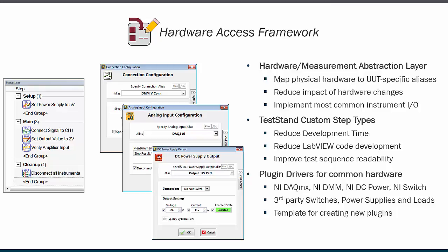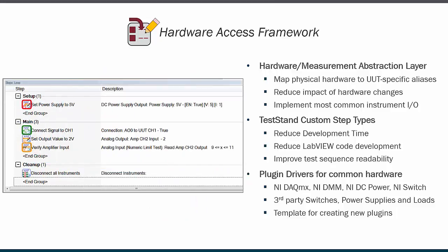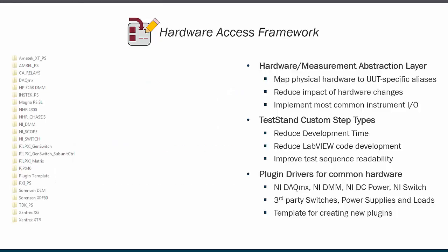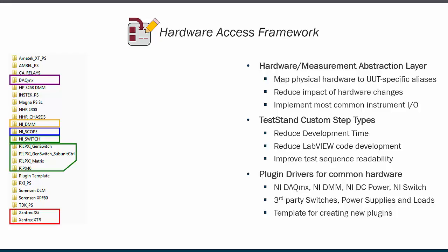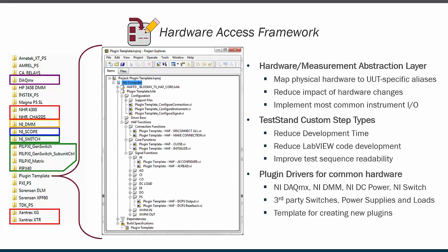Once the channel configuration file is established for a given fixture, a sequence developer can use the step types to focus on the strategy of the test instead of being burdened with the hardware implementation details. Furthermore, changes to hardware can be made within the channel configuration file without affecting the higher-level test sequence. The hardware access framework provides dozens of plug-in instrumentation drivers that cover hundreds of different instruments — from NI switches, scopes, DMMs, and DAC cards, to other third-party instruments like relays, power supplies, and loads. Drivers for new instrumentation can easily be developed and plugged into the architecture by using the provided plug-in template LabVIEW project.